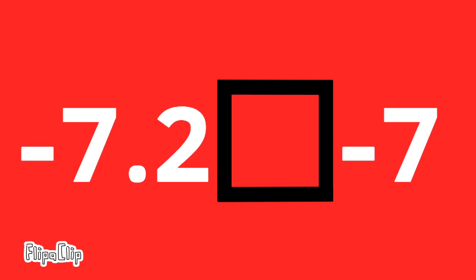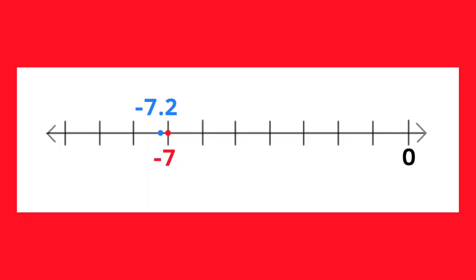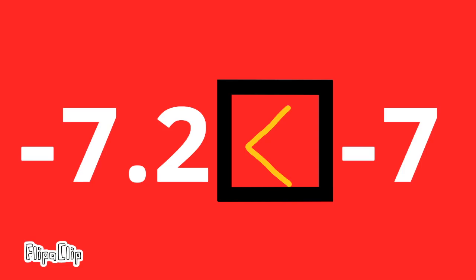Negative 7 and two-tenths compared to negative 7. Negative 7 and two-tenths is further to the left on the number line than negative 7, making negative 7 and two-tenths smaller, or less than, negative 7. Negative 7 and two-tenths is less than negative 7.